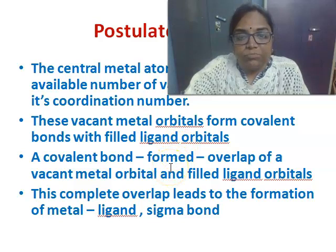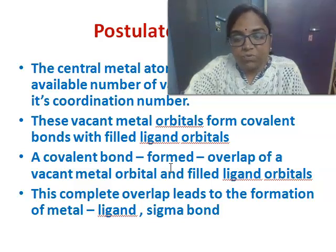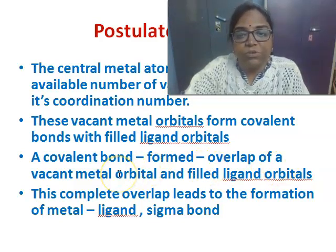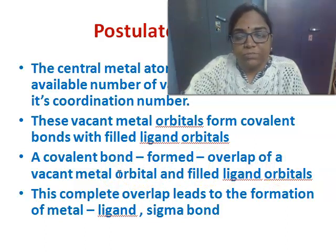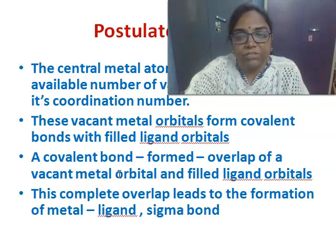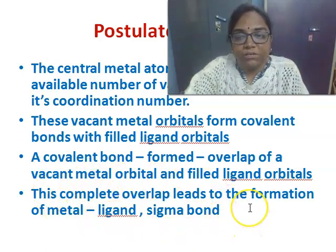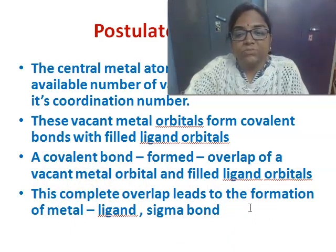The third postulate is that the covalent bond formed is due to the overlapping of the vacant metal orbital and the filled ligand orbitals. That is, the metal-ligand bond is formed due to this overlapping, and this complete overlapping of the vacant metal orbitals and the filled ligand orbitals leads to the formation of a metal-ligand sigma bond.